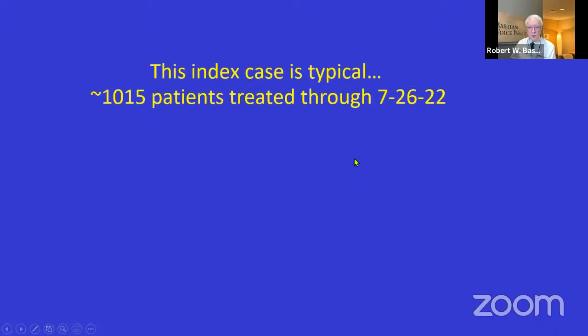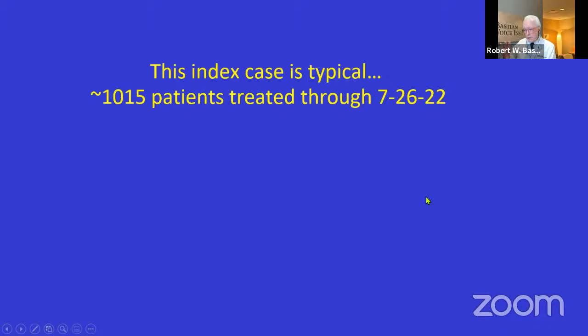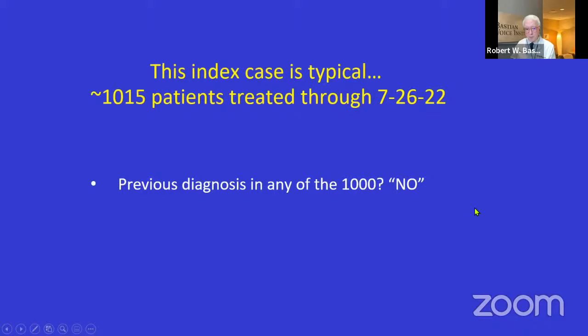This index case is typical — about 1,015 patients treated, and the story they tell with minor variations is almost the very same. Previous diagnosis from any of the 1,000? No. Nobody yet. We have not seen one person who came to us saying 'I have RCPD' from a physician. They have all been sort of self-diagnosed from Reddit and message boards.